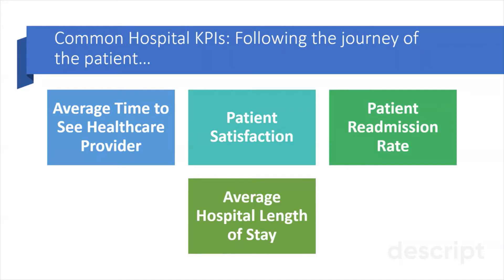On that scale, one could be very unsatisfied and five could be very satisfied. You have the patient re-admission rate, which is a metric describing how many patients were re-admitted to the hospital or healthcare organization within a 30-day period. And finally, the average hospital length of stay, which is the average elapsed time between when the patient was admitted into care and when they were discharged.